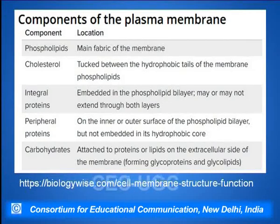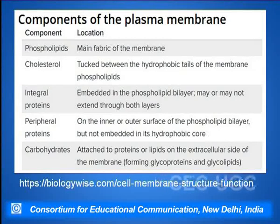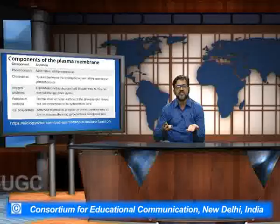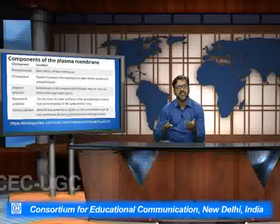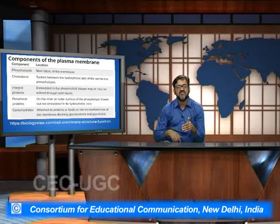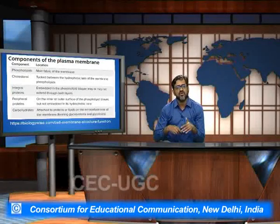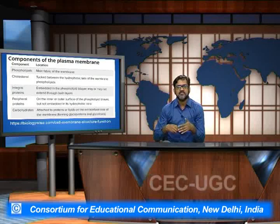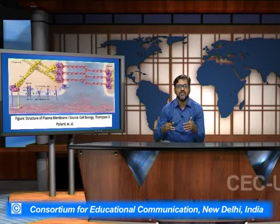There are carbohydrates which are present, forming the glycoproteins and glycolipids. These are the various components of the plasma membrane which play an important role in the fluidity and subsequent flexibility of the plasma membrane.